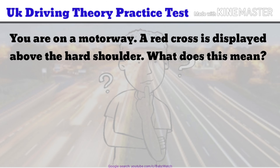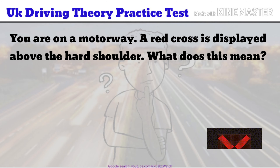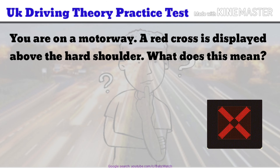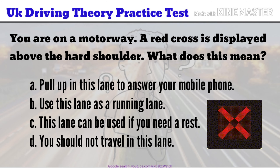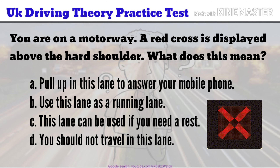UK Driving Theory Practice Test Question 9 of 50. You are on a motorway. A red cross is displayed above the hard shoulder. What does this mean? a. Pull up in this lane to answer your mobile phone. b. Use this lane as a running lane. c. This lane can be used if you need a rest. d. You should not travel in this lane. The correct answer is d.